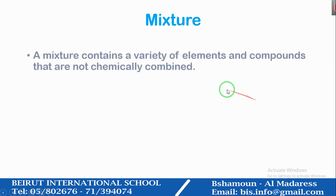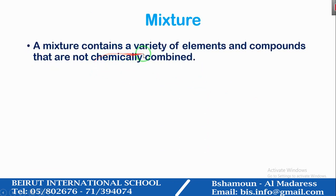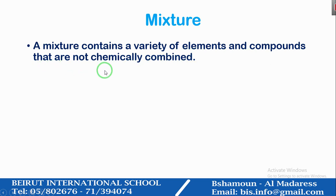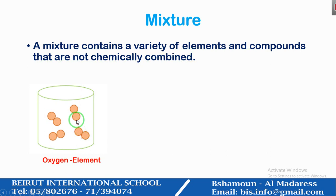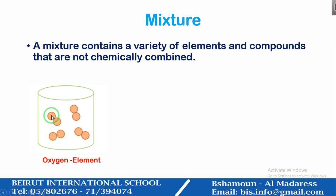What is a mixture? A mixture contains a variety of elements and compounds that are not chemically combined. So here I have an oxygen element because it is made up of two oxygen atoms that are chemically combined — they are attached together. I have four oxygen elements, and each element is made up of two oxygen atoms combined together.